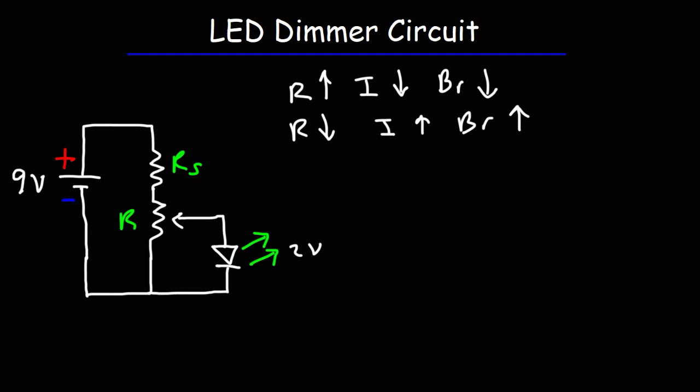RS prevents too much current from flowing to the LED. Because you can adjust the potentiometer where the resistance is almost zero, and if you don't have RS to limit the amount of current flowing through the LED, you can damage it. So you need RS to prevent that from happening.